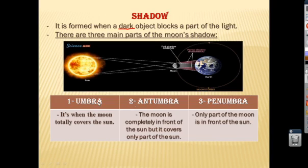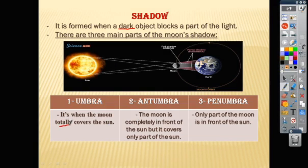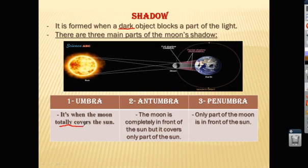First, umbra — it is when the moon totally covers the sun. Antumbra — the moon is completely in front of the sun, but it covers only part of the sun. The third one, penumbra — only part of the moon is in front of the sun.